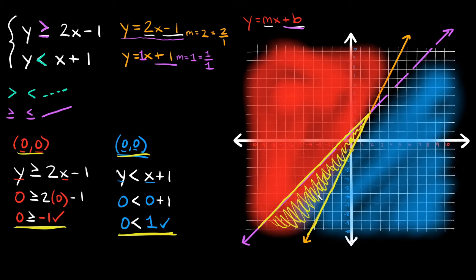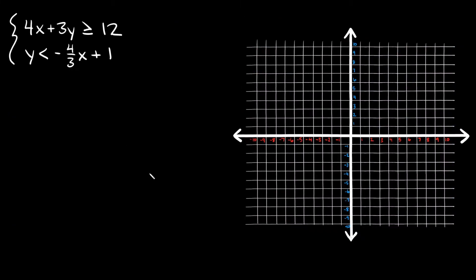Let's do one more example. The system is: 4x plus 3y is greater than or equal to 12, and y is less than negative 4 thirds x plus 1. Again, the first thing you want to do is graph your boundary lines by replacing the inequality symbols with equal signs. So the first one becomes 4x plus 3y equals 12.